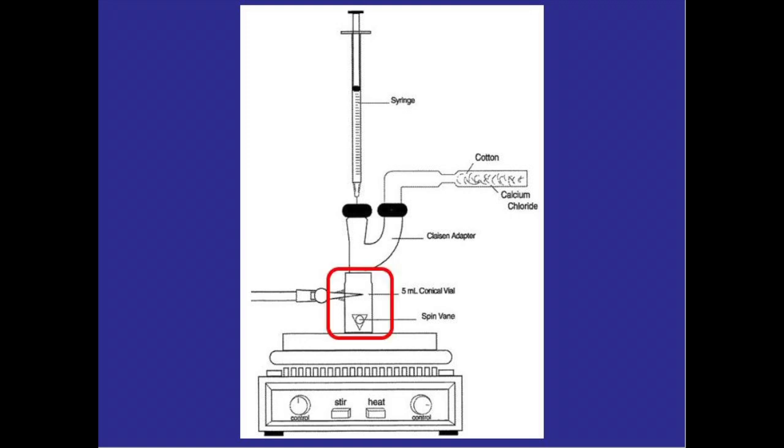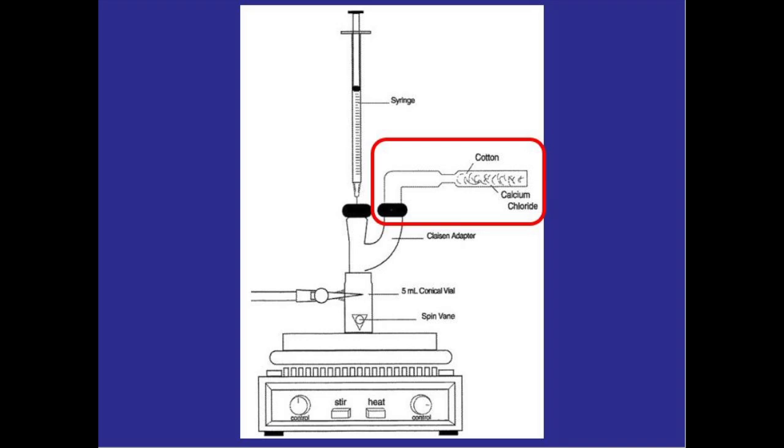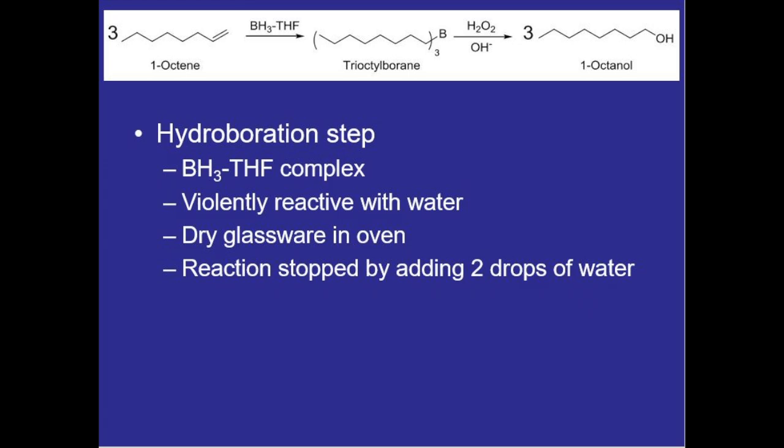We'll have our conical vial where our reagents will be attached to a Claisen head adapter which has two parts. The first part will be attached to a drying tube so that it can absorb water from the atmosphere, the second part will be attached to a cap and a septum so that we can add our reagents through a needle and a syringe therefore not exposing them to any moisture in the atmosphere. Once the reagents have been allowed to spin for about 45 minutes we'll add two drops of water to stop the reaction and move on to the next step which will be the oxidation step.